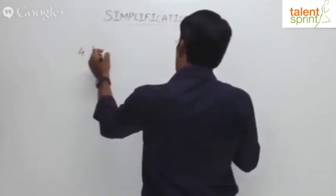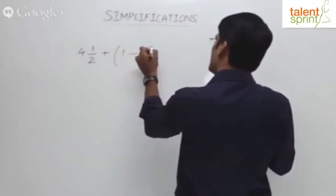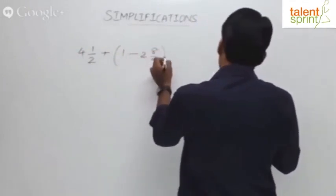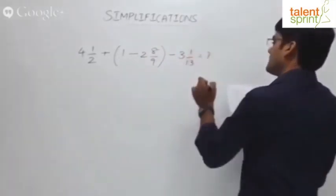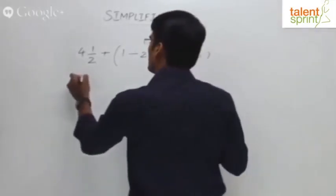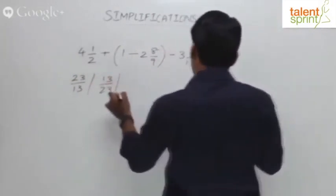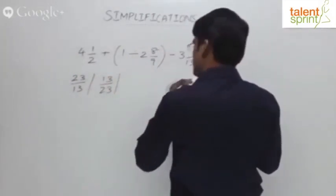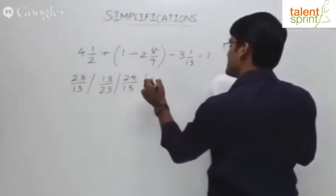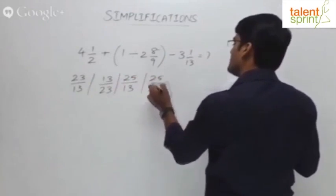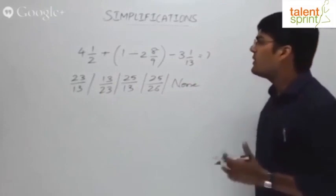4 and 1/2 plus 1 divided by 2 and 8/9 minus 3 and 1/13 equals to what? The options are 23/13 as the first option, then we have 13/23, then 25/13, next is 25/26, and the fifth option as usual is none of these. So that's the question there.